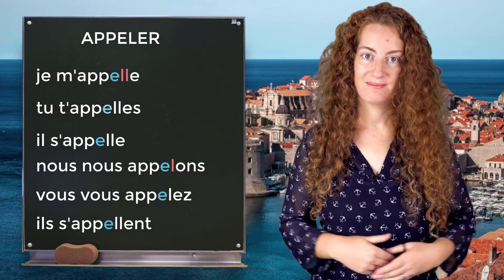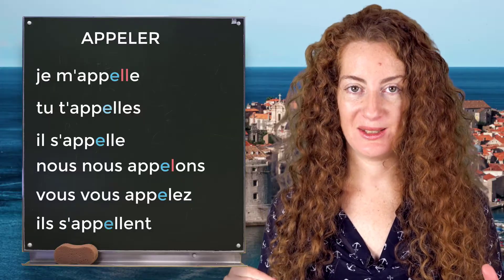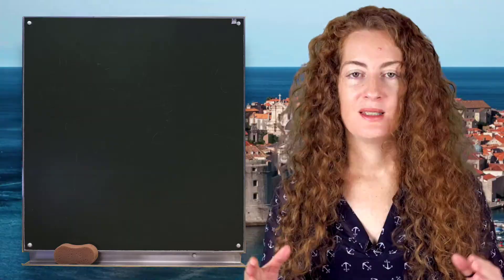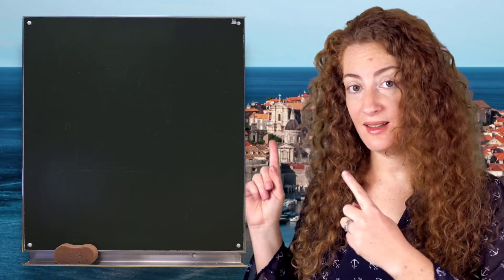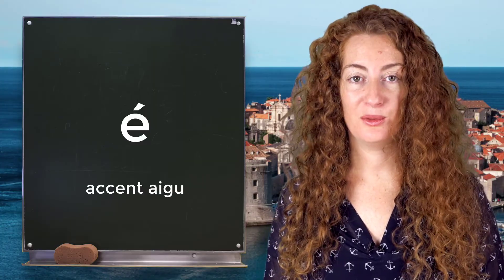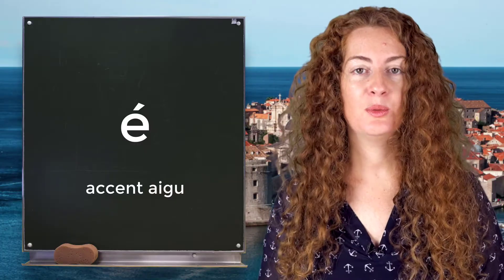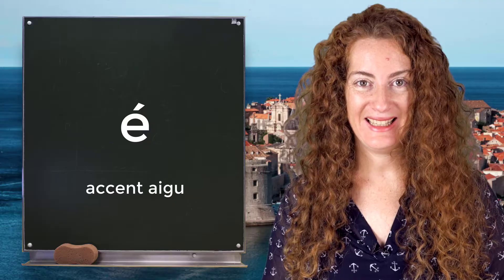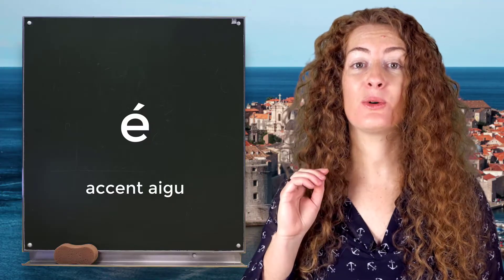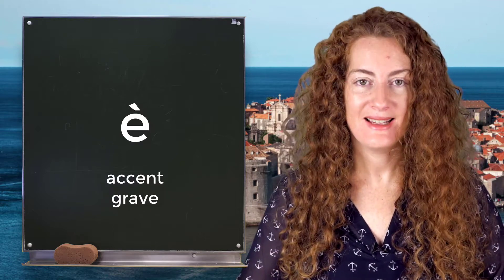So we've seen the situation of the E without any accent. Now we are going to see how we pronounce it when there is an accent. When you have an accent like this (é), we call it accent aigu. So when you have this accent, you pronounce it 'é'. And when you have the other accent (è), we call it accent grave — you pronounce it 'è'.